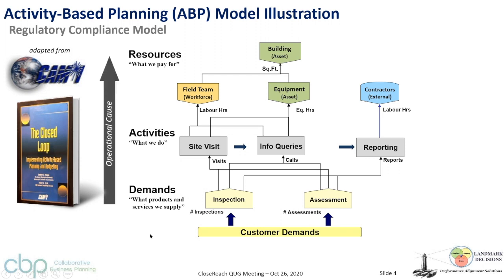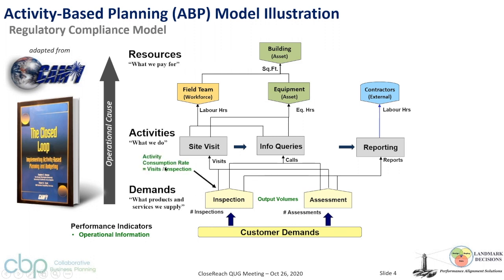We load operational and financial data into that model. The intelligence in the CBP application is the math performed — it's not a traditional Qualiware application. Operational information includes volumes: if we know volumes of inspections and assessments, and consumption rates — say on average two site visits per inspection — then 10 inspections require 20 site visits. If a site visit takes 40 hours, that's 80 hours of field team needed for just that part of the process.